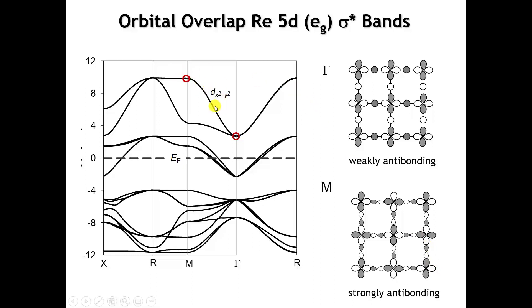If I'm going a little too quickly with the orbital overlap arguments, I would encourage you to go back to our lecture on the electronic structure of the copper oxide layers, because the overlap in those CuO2 layers is almost entirely analogous to what's happening here in the xy plane.